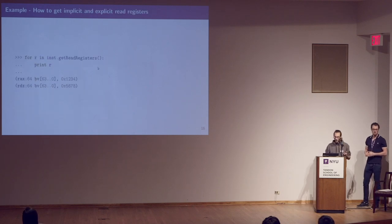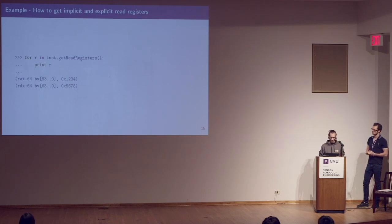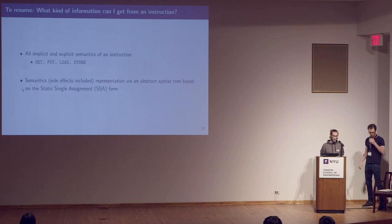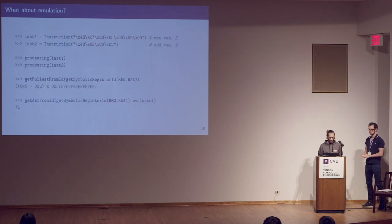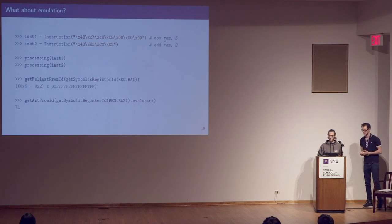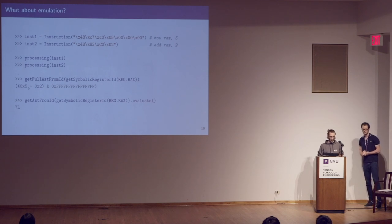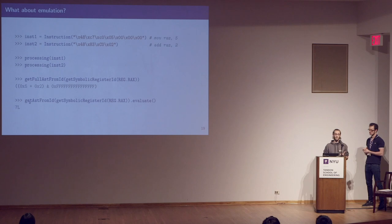Triton is also able to provide all implicit and explicit information — like what registers were being read and what registers were being written. For example, we can see the destination register, the RIP, and all flag assignments. To summarize, Triton gives you all implicit and explicit semantics information over an abstract syntax tree. For emulation: if we define two instructions — move 5 into RBX and add 2 — after executing both, we can get back the AST of the destination register, which is 5 plus 2. Evaluating this AST gives a concrete value. That's the basics of our emulation.